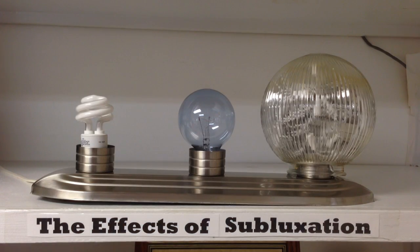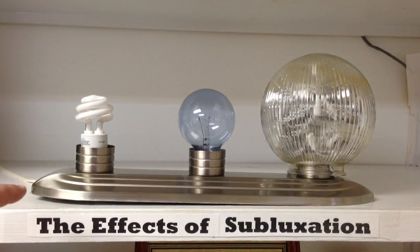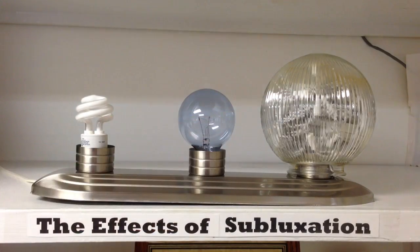So as you can see, subluxations affect different parts of the body differently, just like one electrical impulse affects these three different lights differently.